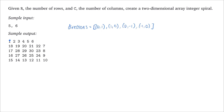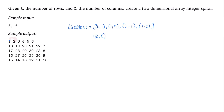Each tuple represents r comma c — the direction we want to move. For example, with 0 comma 1 we move 0 rows down and 1 column to the right. So if we're at 1, we increment rows by 0 and columns by 1, ending up at 2, then 3, then 4, then 5, then 6.